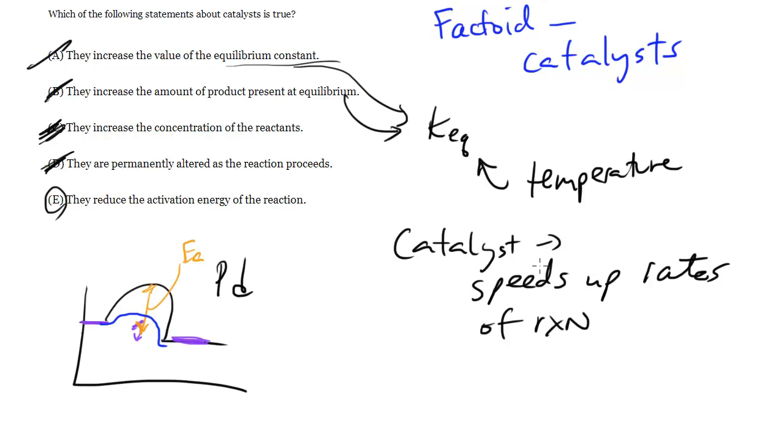Notice it lowers the rates of reaction for both directions. So if I go from products to reactants, it's lower. And additionally, if I go from reactants to products, it's lower. If I go from products to reactants, it's also lower because the hump is lower to both sides, so to speak.